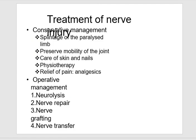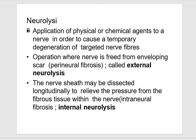Treatment of nerve injury: conservative management includes splintage, preserving mobility of the joint, care of skin and nails, physiotherapy, and relief of pain. Operative options are neurolysis, nerve repair, nerve grafting, and nerve transfer. Neurolysis is the application of physical or chemical agents to a nerve to cause temporary degeneration of targeted nerve fibers. In surgery, the nerve is freed from enveloping scar — epineural fibrosis — by external neurolysis, or internal neurolysis where the nerve sheath is dissected longitudinally to relieve pressure from fibrous tissue within the nerve (interneural fibrosis).